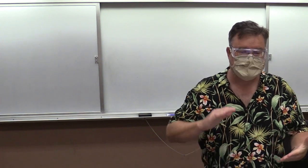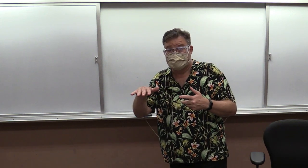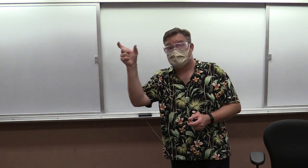The logic of ANOVA comes down to two sources of variance: between and within. Variance between groups is due to actual treatment effects plus the role of chance. Variance within groups is just due to chance. If we divide variance between by variance within, we get: (treatment effect + chance) / chance. The chance cancels out across numerator and denominator, leaving just the treatment effect.